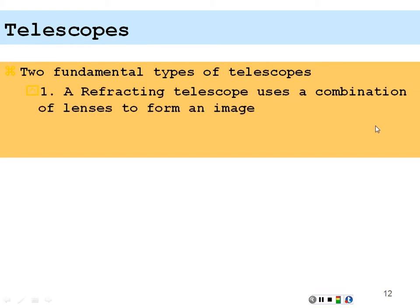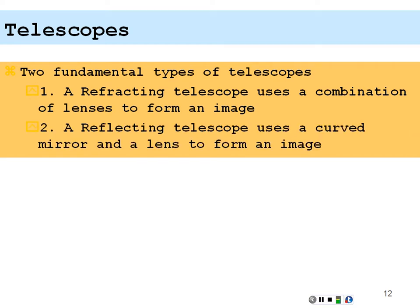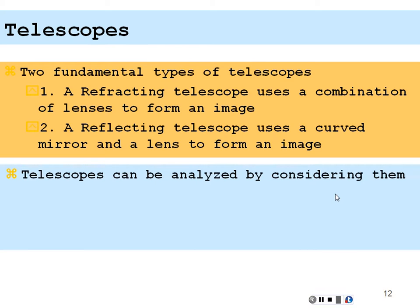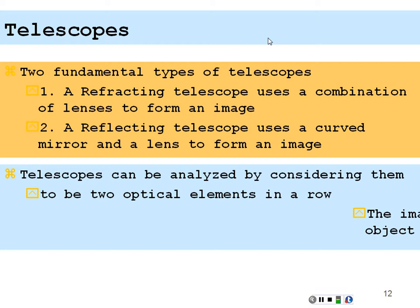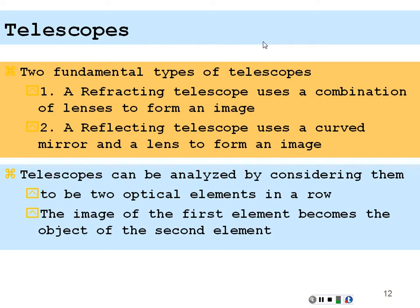There's two fundamental types of telescopes. A refracting telescope uses a combination of lenses to form an image. Those are the first kinds of telescopes. The kind of telescope used by Galileo. And a reflecting telescope uses a curved mirror and a lens to form an image. That's the design first proposed by Newton. Telescopes can be analyzed when considering them to be two optical elements in a row. The image of the first element becomes the object of the second element. For a refracting telescope it would be two lenses. For a reflecting telescope it would be a mirror and then a eyepiece lens.